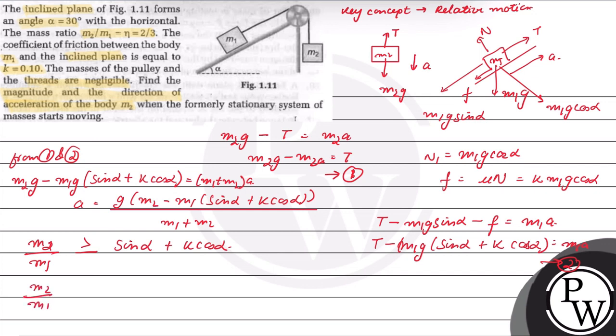On solving, M2 upon M1 for this case should be greater than 0.5865, and we are given that M2 upon M1 value is 2 by 3 or 0.66. And if M2 moves downward, then M2 upon M1 ratio should be greater than or equal to 0.5865, so this is true. Therefore M2 will move downward as it is satisfying the equation.